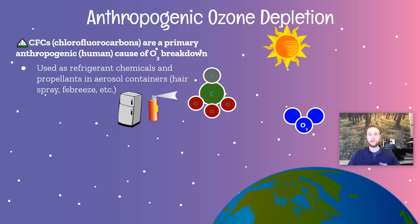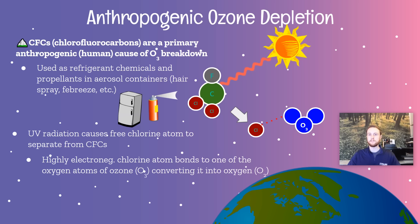When CFCs are emitted into the atmosphere, the UV radiation from the sun is going to strike them. That energy, just like it did with ozone and oxygen molecules, is going to break off a chlorine atom. The problem with these chlorine atoms is they're extremely electronegative. So this chlorine atom is going to want to bond to another atom, and it's going to bond with one of the oxygen atoms of ozone. When it does that, it converts the ozone back into O2.